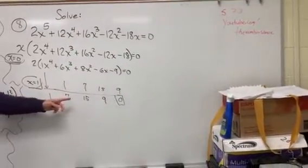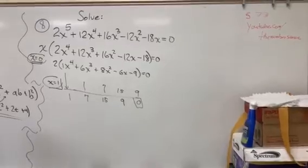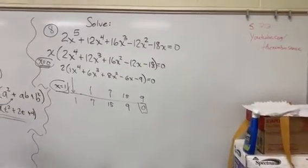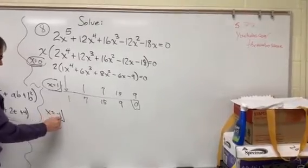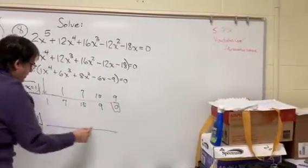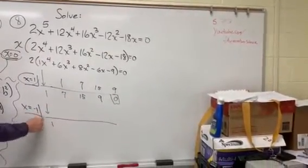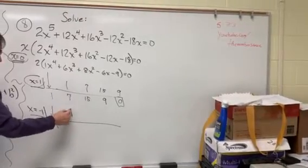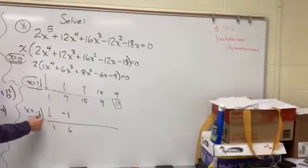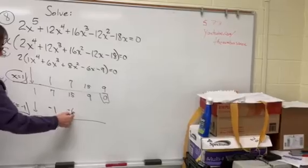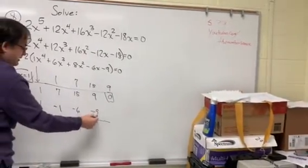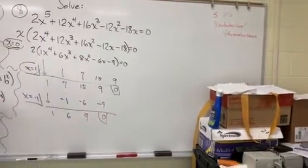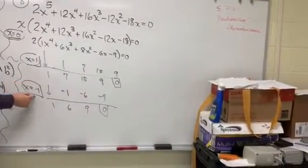And so now I have 1, 7, 15, and 9. We could try x equals negative 1, and then we bring the first one down. Negative 1 times 1 is negative 1. 7 minus 1 is 6. Negative 1 times 6 is negative 6. We have 9. Negative 1 times 9 is negative 9. And 0, that means x equals negative 1 works. So we have our third root here.